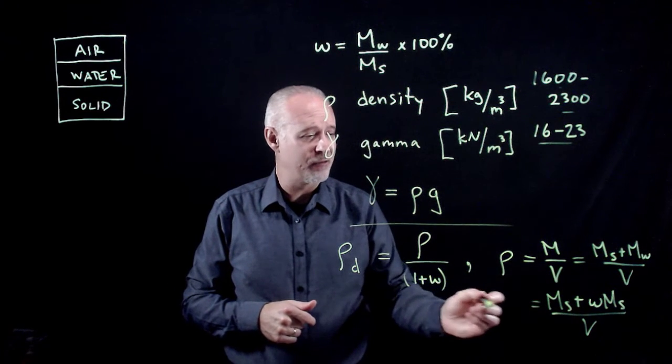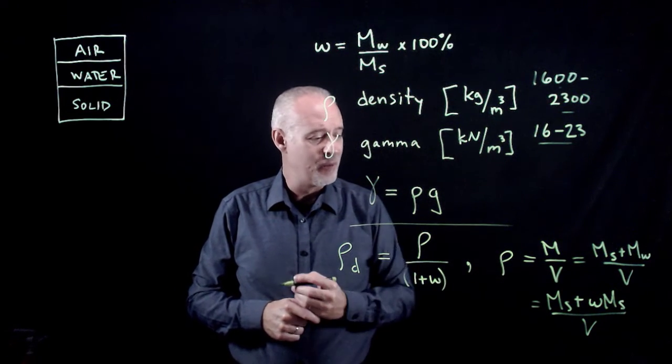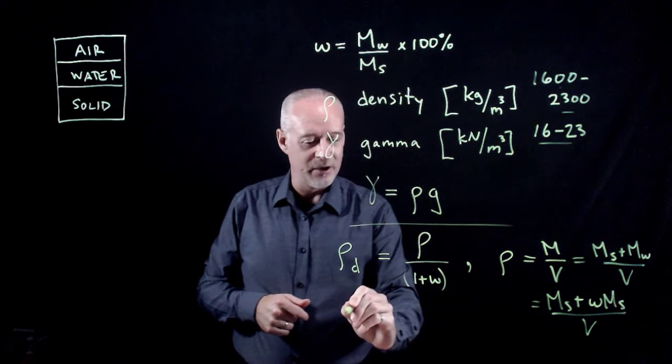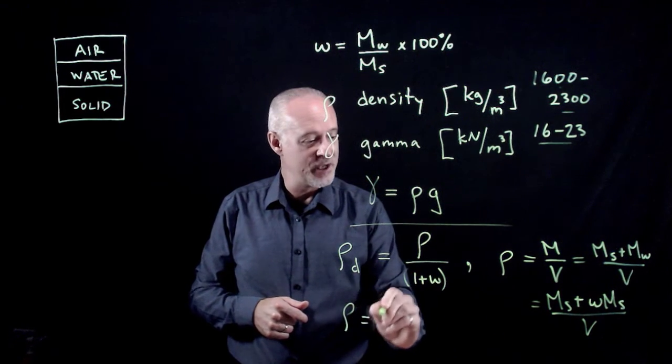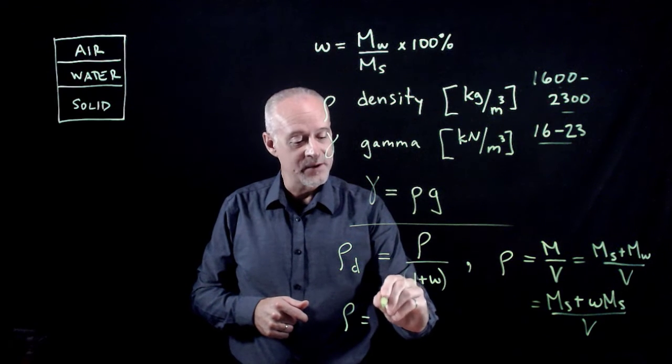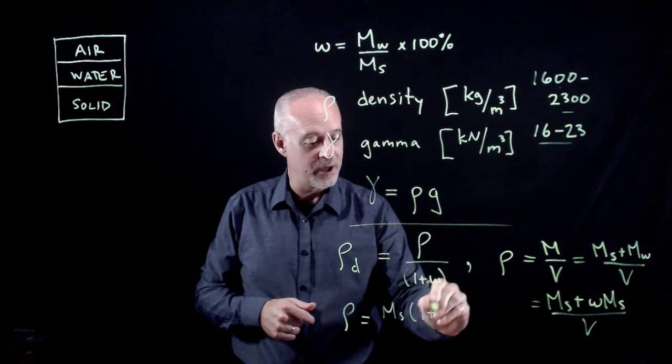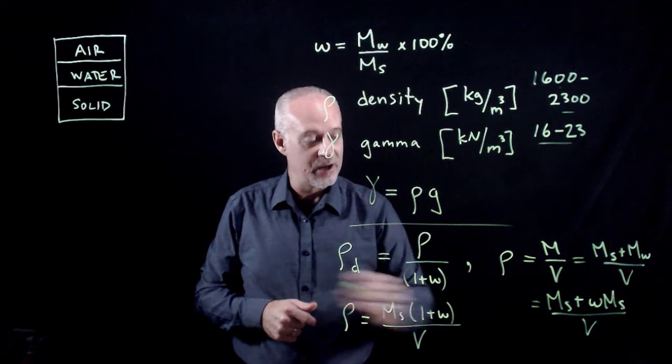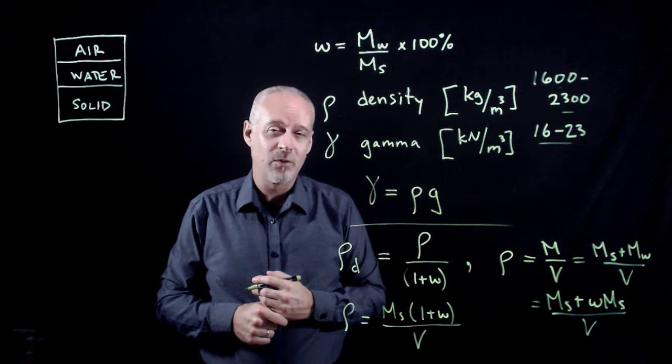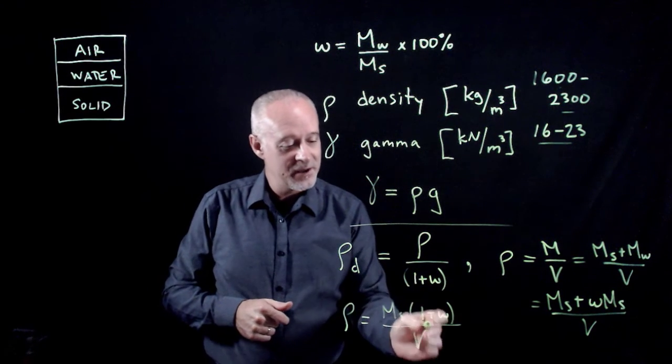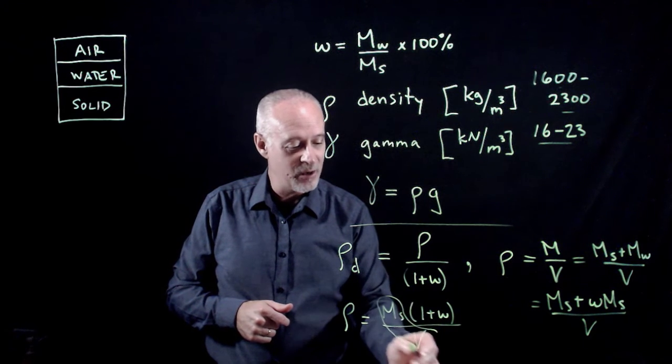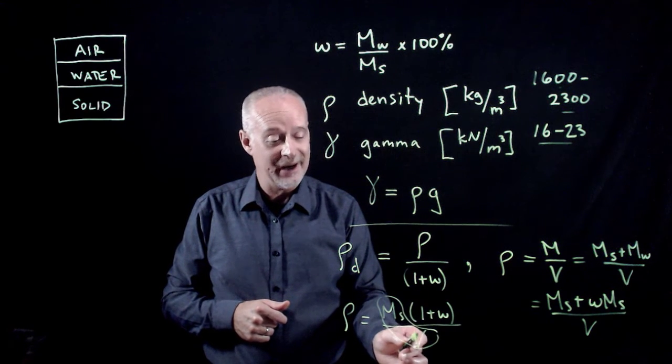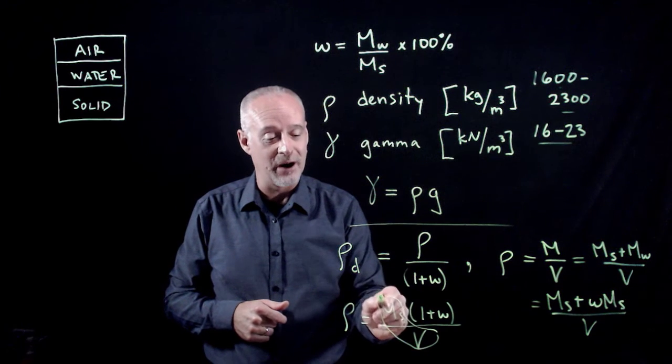If I factor out the mass of the solids, I end up with the density being equal to the mass of the solids times 1 plus the water content, just a little bit of algebra there, divided by the volume. And what you can see immediately is that this part of the equation, the mass of the solids divided by the volume, is actually the definition of the dry density.